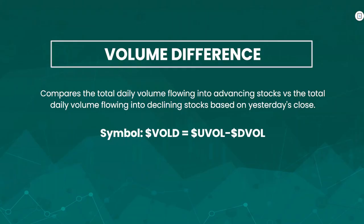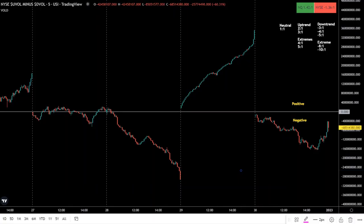Volume difference — also known as the volume spread index — compares the total daily volume flowing into advancing stocks by the total daily volume flowing into declining stocks. Just like ADD, this is based on yesterday's close. The ticker symbol is VOLD: VOL standing for volume and D standing for difference, which is the difference between up volume and down volume. On the chart we have ticker symbol VOLD, the volume difference for the New York Stock Exchange, viewed on the five-minute time frame.